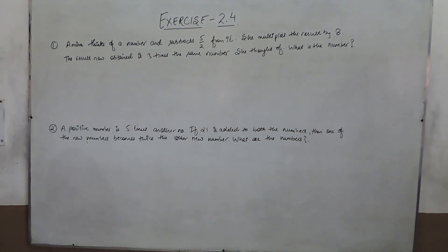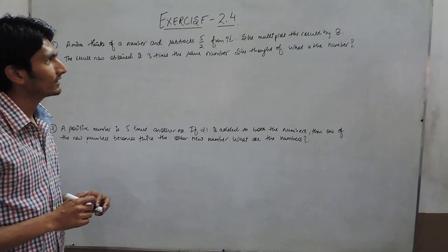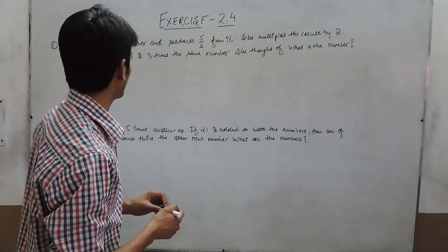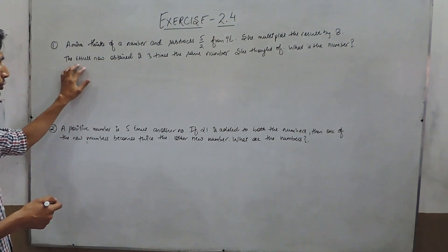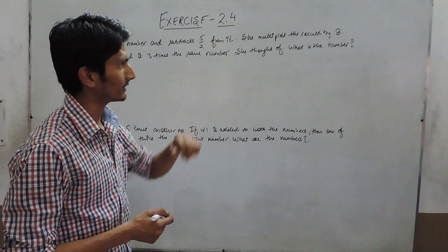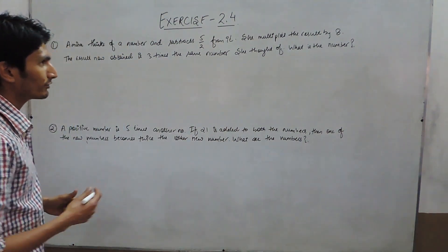In question number first, it is given that Amina thinks of a number and subtracts 5/2 from it. She multiplies the result by 8, and the new number she obtained is three times the same number. You have to find the number.